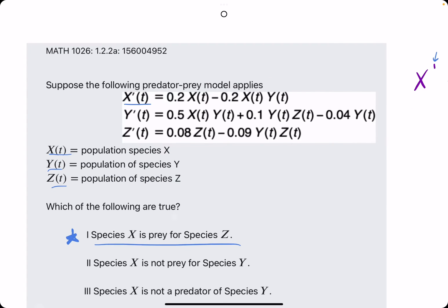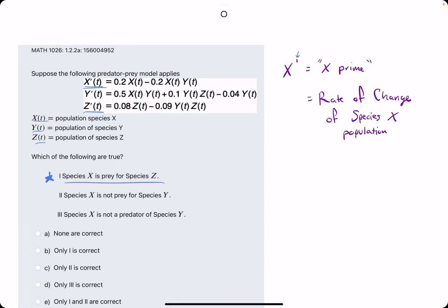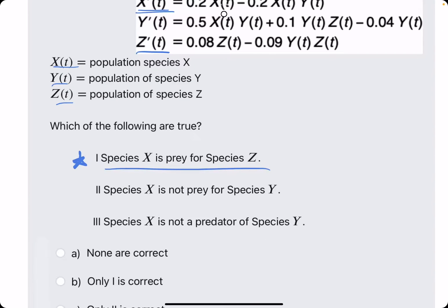So to check for this, does X prime have any Z terms in its equation? It does not. And also, does Z prime have any X terms in its equation? It does not. So right away, X cannot be prey for species Z because they have no connection. They're not even related in their equations. So that's an easy way to tell that that is false.